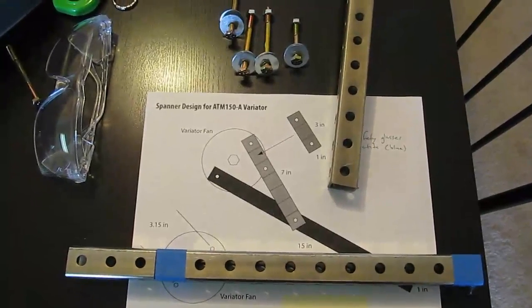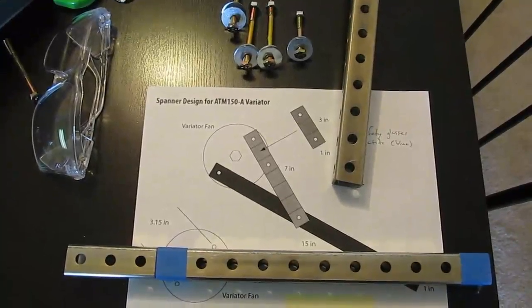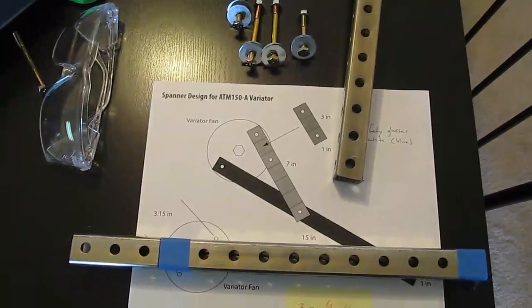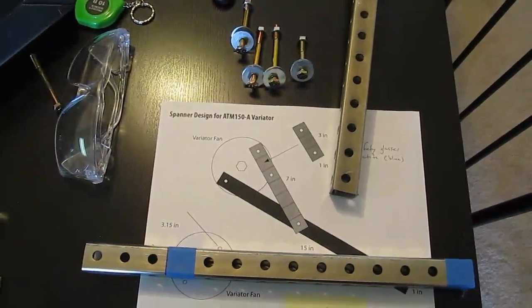The steel tubing is the most expensive part in this spanner design. It's about $18 if you get it at Lowe's. Altogether, the hardware and parts are going to cost you about $25.